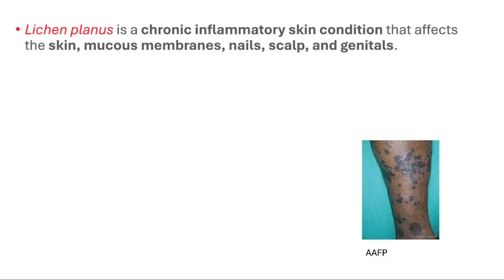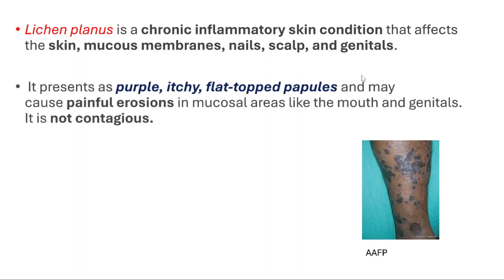Hey everyone, this is Daily Dose of Medicine. In today's video we will talk about lichen planus, a chronic inflammatory skin condition that affects the skin, mucous membranes, nails, scalp, and genitals. It presents as purple, itchy, flat-topped papules, as you can see on this image. It may cause painful erosions in mucosal areas like the mouth and genitals. It's not contagious.